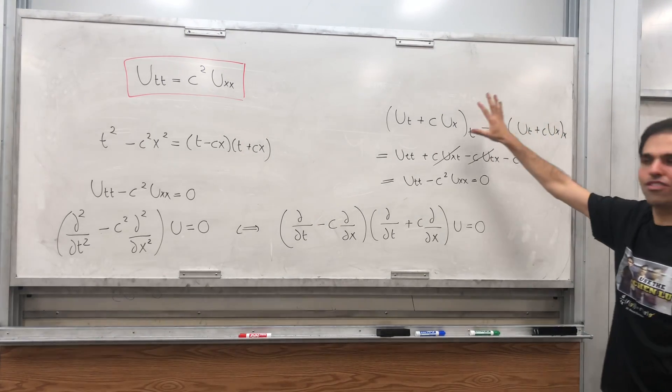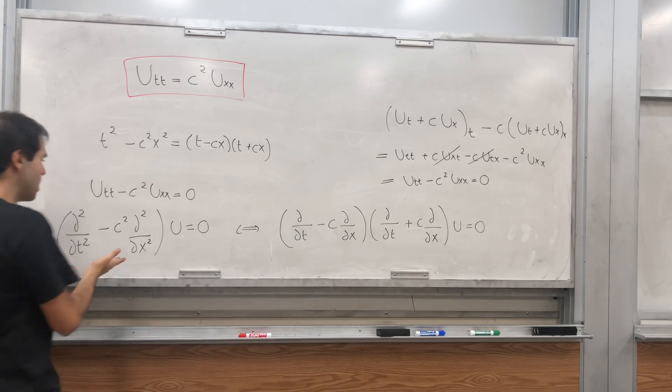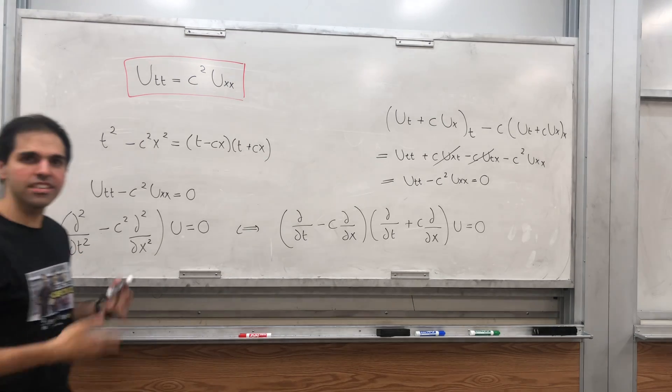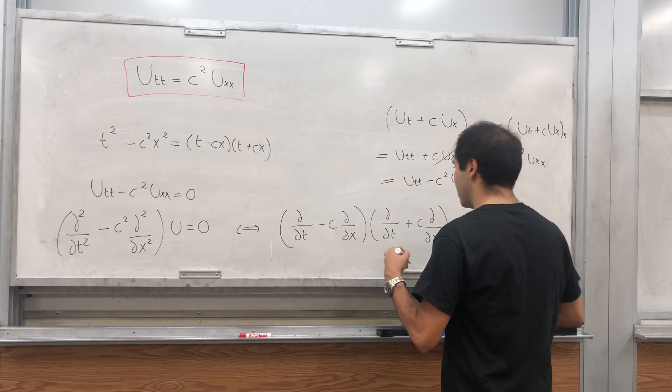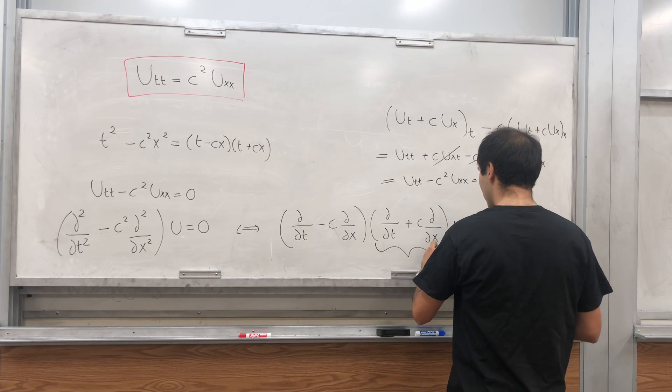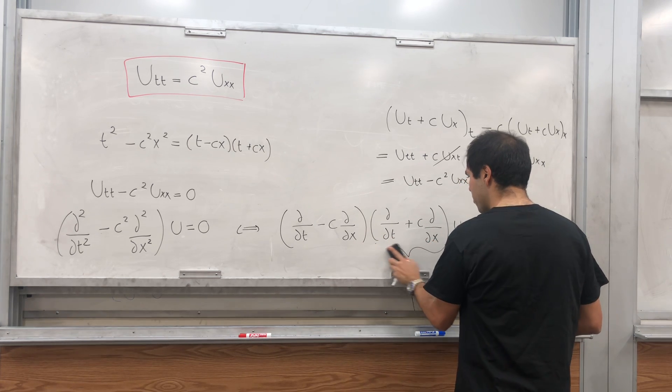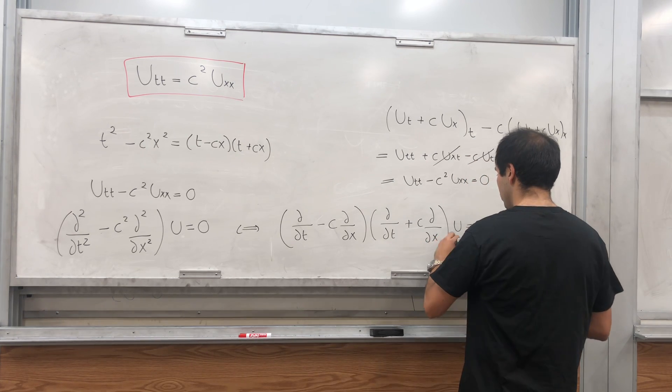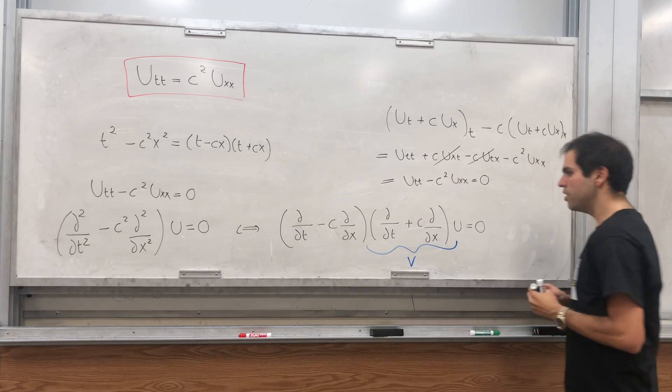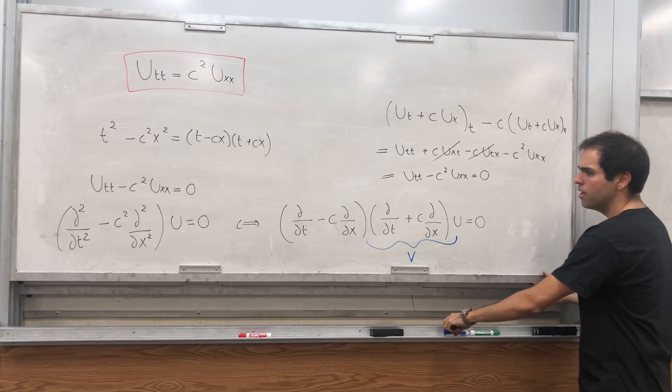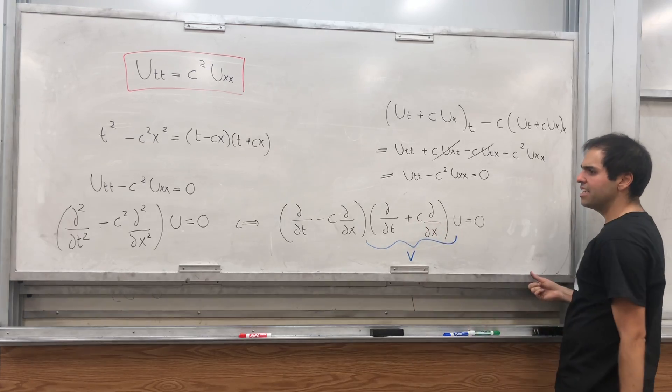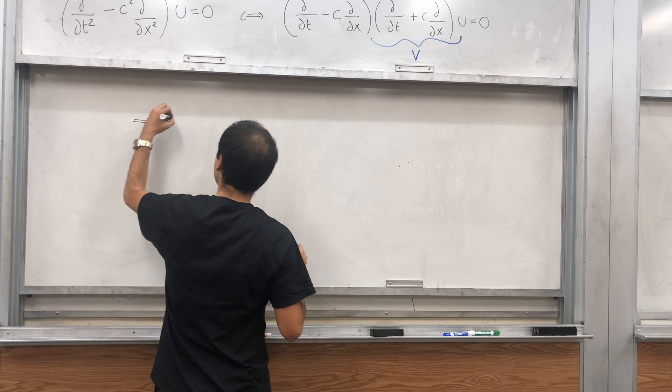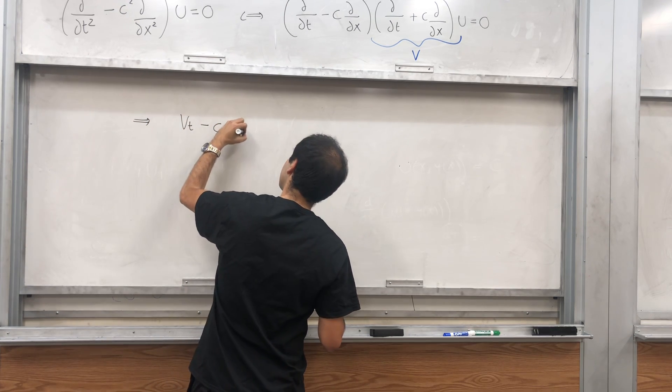All right. What's the advantage of this? The advantage is instead of having this second order thing that involves two derivatives, you actually just write this as a product of first derivative kind of things. In other words, let this gibberish here, del over del t plus c del over del x u, let's call this v. Then what does the equation become? It becomes v_t minus cv_x equals zero.